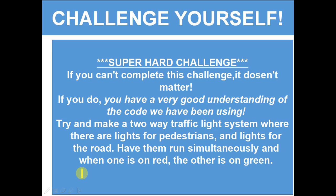Super hard challenge. If you can't complete this challenge, it doesn't matter. But if you do, you have a very good understanding of the code we've been using. I mentioned how you need two red, one yellow, two green. I want you to make a two-way traffic light system where there are lights for pedestrians and lights for the road. Have them run simultaneously - when one is on red, the other is on green.